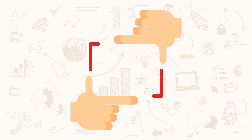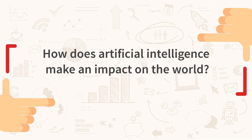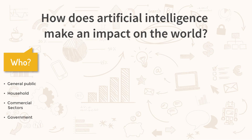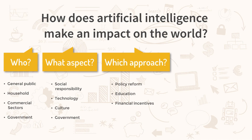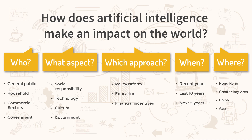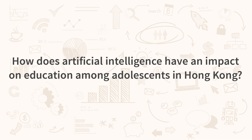Try to make your question more precise and focused by asking: Who? What aspect? Which approach? When? Where? Finally, you may come up with a research question like: How does artificial intelligence have an impact on education among adolescents in Hong Kong?